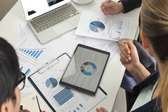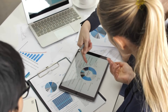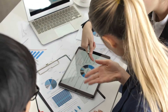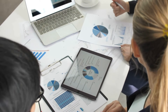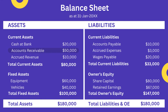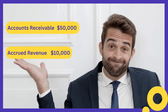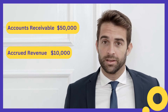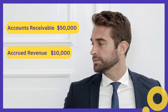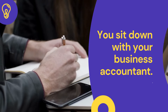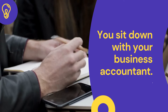Let's say you're reviewing the latest balance sheet for your business and it contains these items in the current assets section: Accounts Receivable of $50,000 and Accrued Revenue of $10,000. You're a little unsure as to why there needs to be two different assets on the balance sheet considering they seem to be the same thing, so you sit down with your business's accountant who is more than happy to explain.